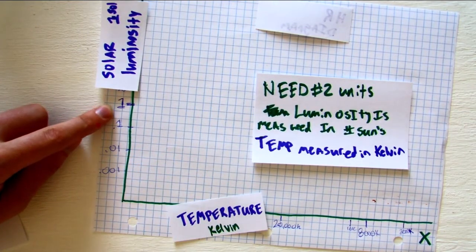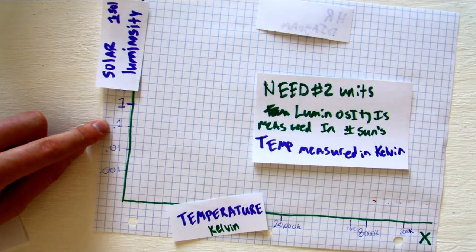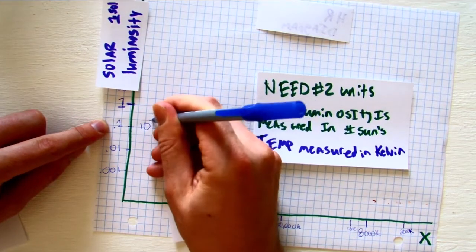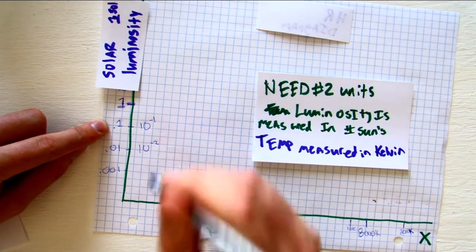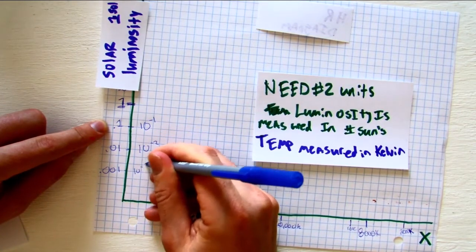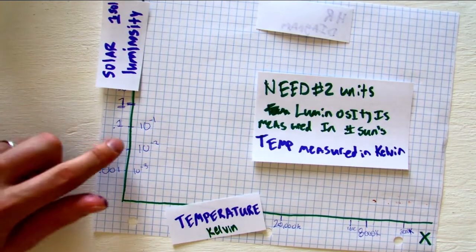You might also see that expressed in scientific notation as well. So this would be 10 to the negative 1, 10 to the negative 2, and 10 to the negative 3. You wouldn't write both in your graph, you'd pick one or the other.